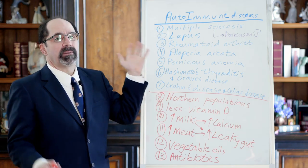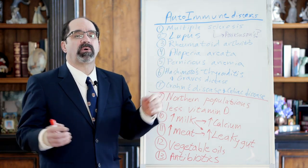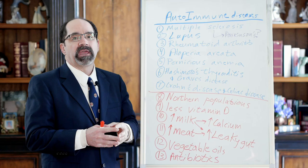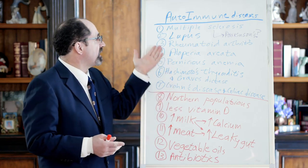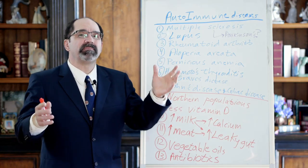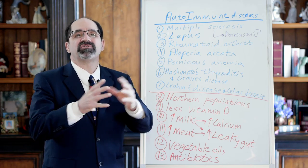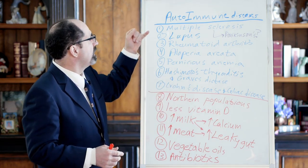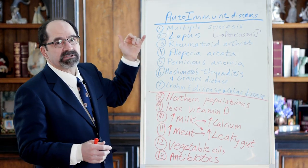First one we'll talk about is multiple sclerosis, sort of a classic one affecting the neurologic system. An autoimmune disease like multiple sclerosis presents with demyelination, loss of the myelin insulation coating around the neurons of the brain.